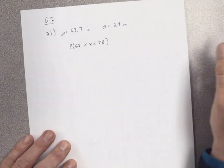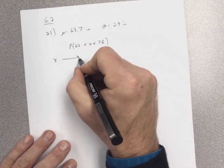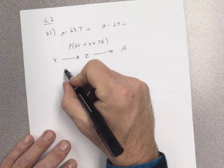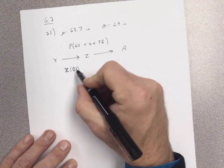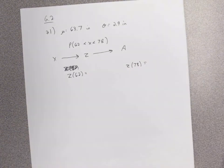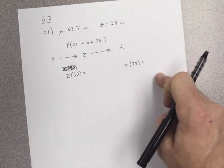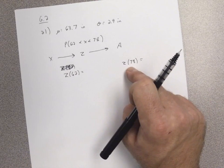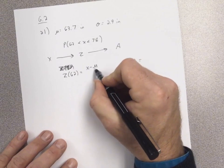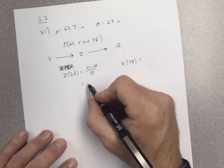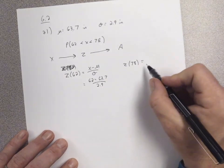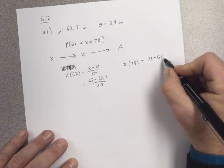We compute two z scores: z(62) and z(78). Using z = (x − μ) / σ: for 62, that's (62 − 63.7) / 2.9, and for 78, that's (78 − 63.7) / 2.9. On your calculator, do the numerator first, hit enter, then divide by 2.9 — or use parentheses around the numerator so you don't accidentally only divide 63.7 by 2.9.